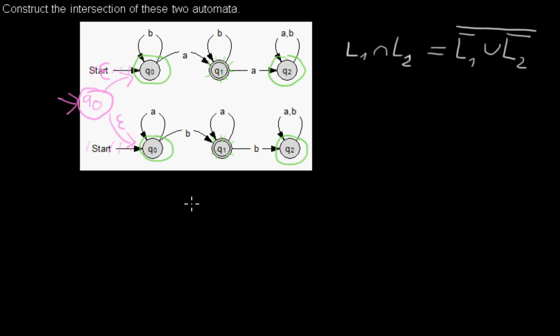I won't draw it again because it will take a long time, but just to give you an idea that you can get the intersection of two automaton in two possibilities.